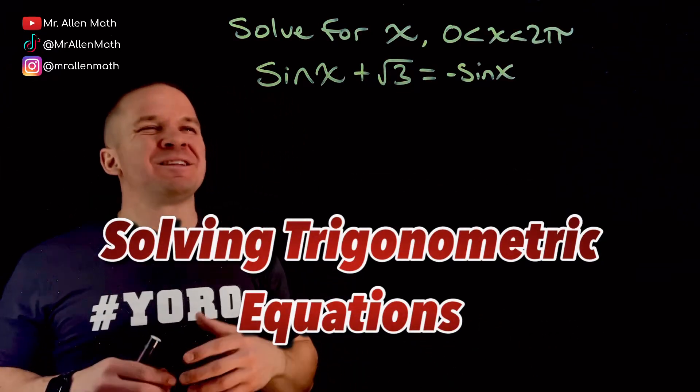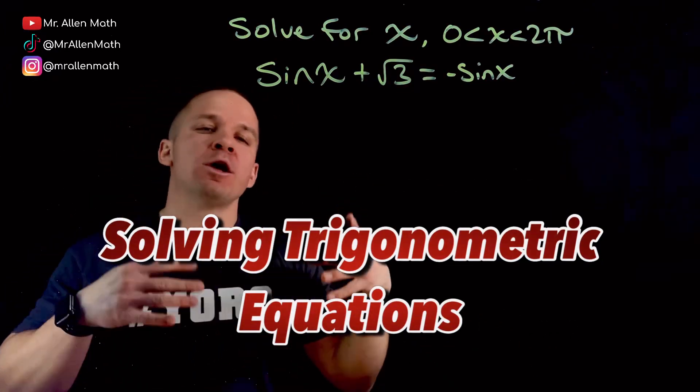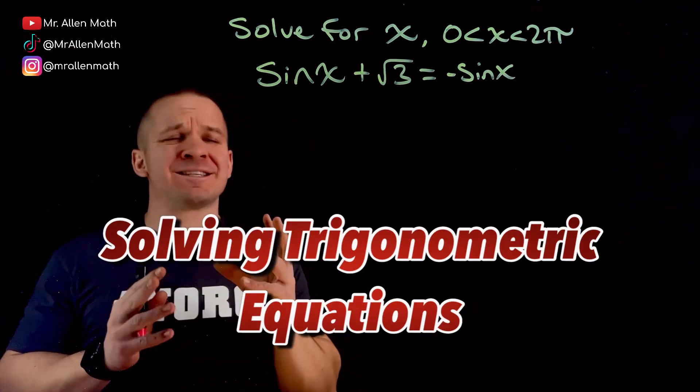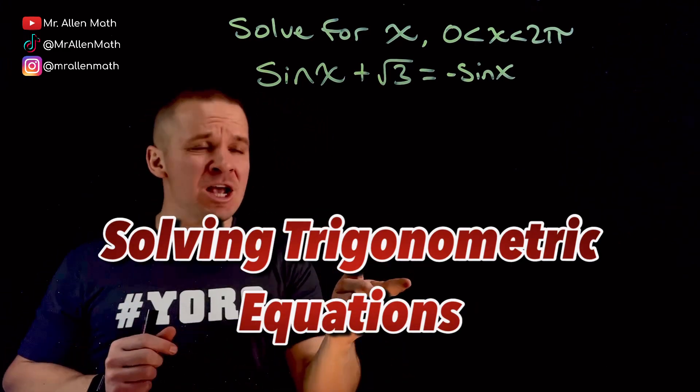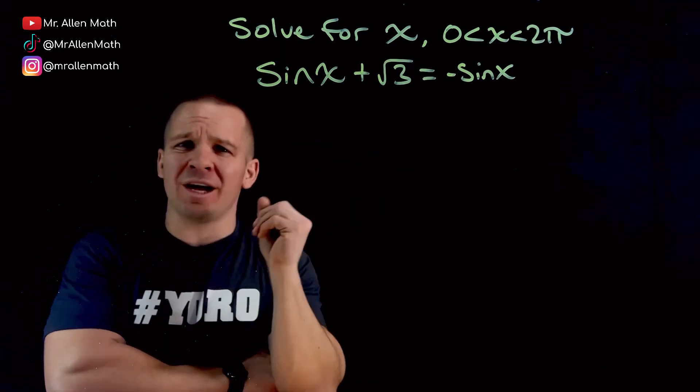What's happening, dogs? Mr. Allen here. We're about to solve for x in this dope trig equation. We get sine of x plus root 3 equals negative sine of x. Oh my goodness, what are we going to do?